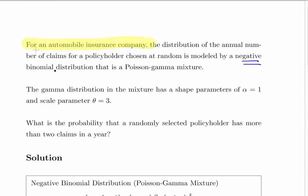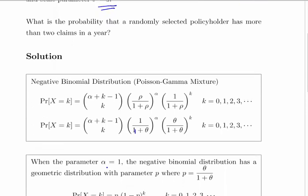The gamma distribution in the mixture has a shape parameter alpha equal to 1 and a scale parameter theta equal to 3. What is the probability that a randomly selected policyholder has more than two claims in a year?